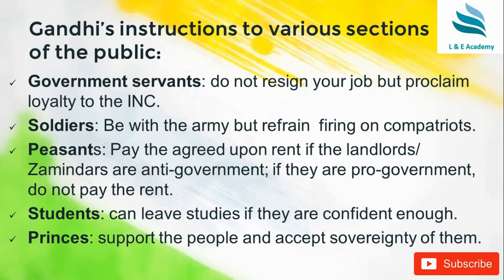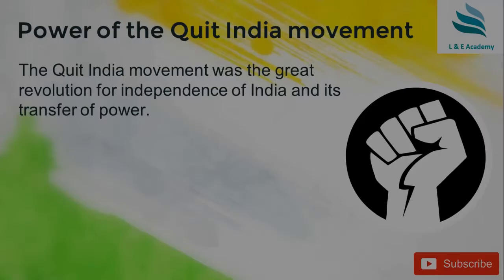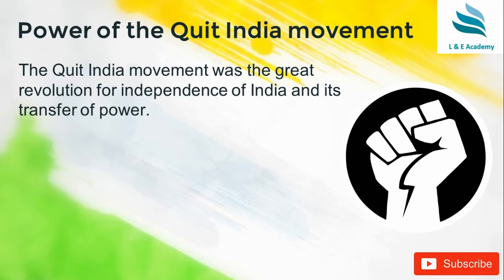So it was a very carefully thought-out movement by Gandhiji. As already discussed, this resolution was passed on 8th August 1942 in Bombay. The power of the Quit India Movement was that the Britishers had to come up with a solution to transfer power to India and grant independence. This was the first important step taken by the Britishers toward giving India its freedom.